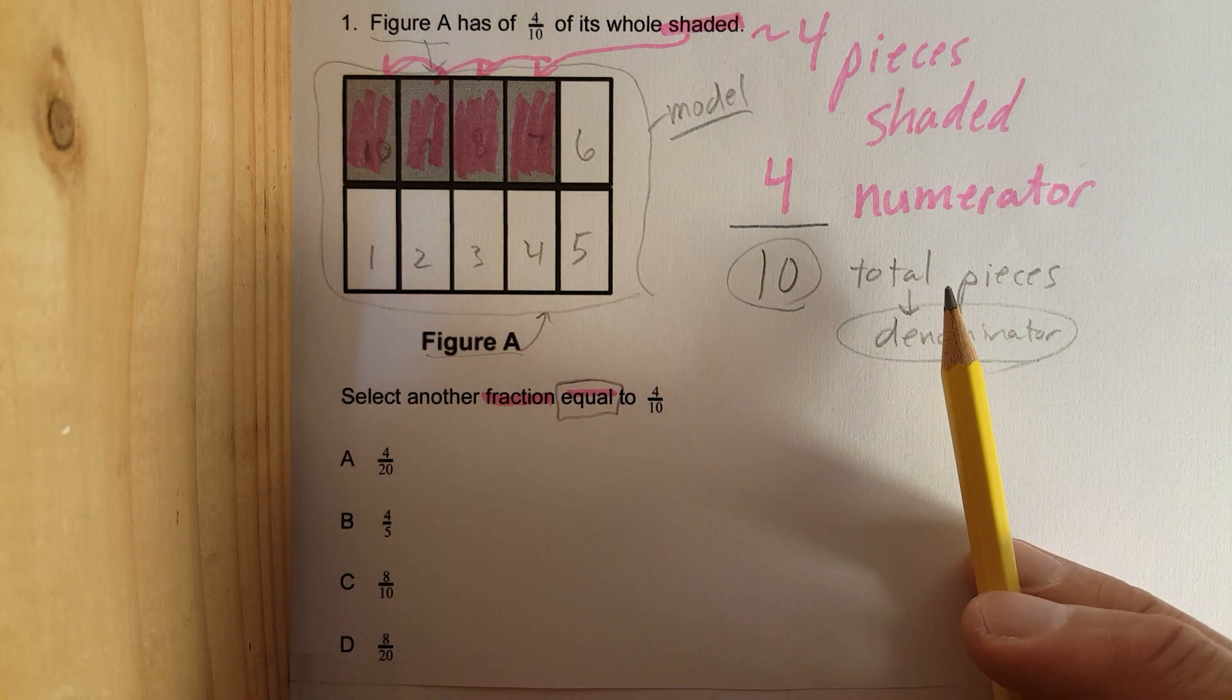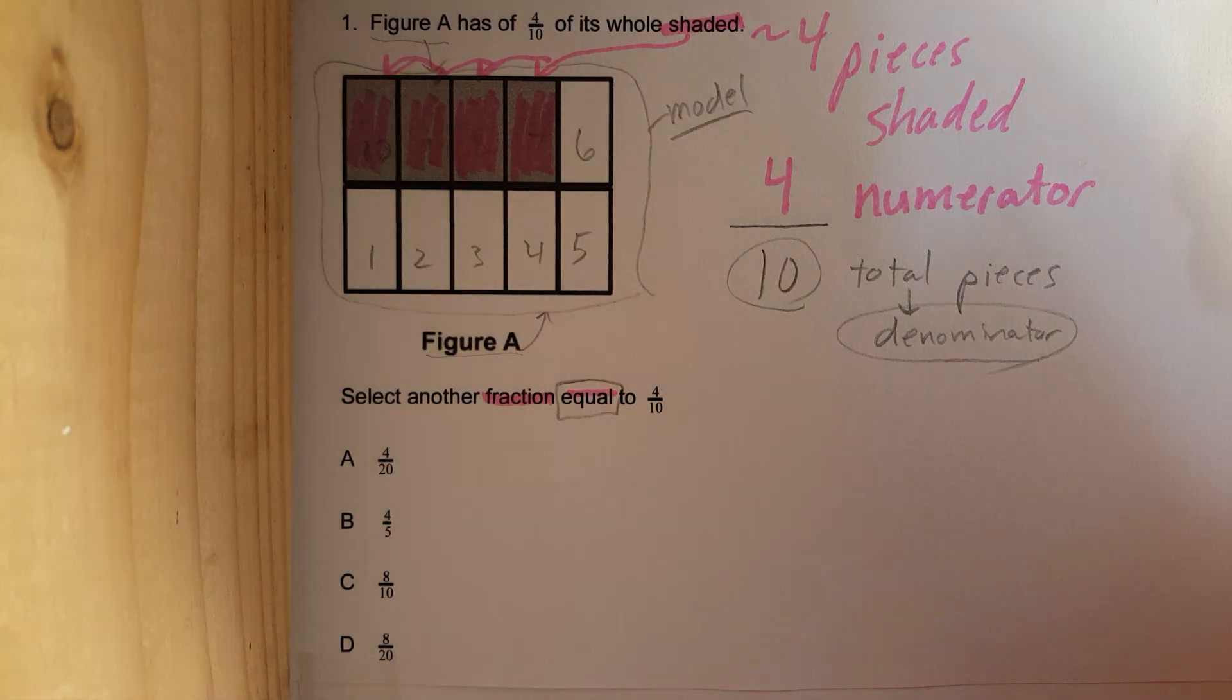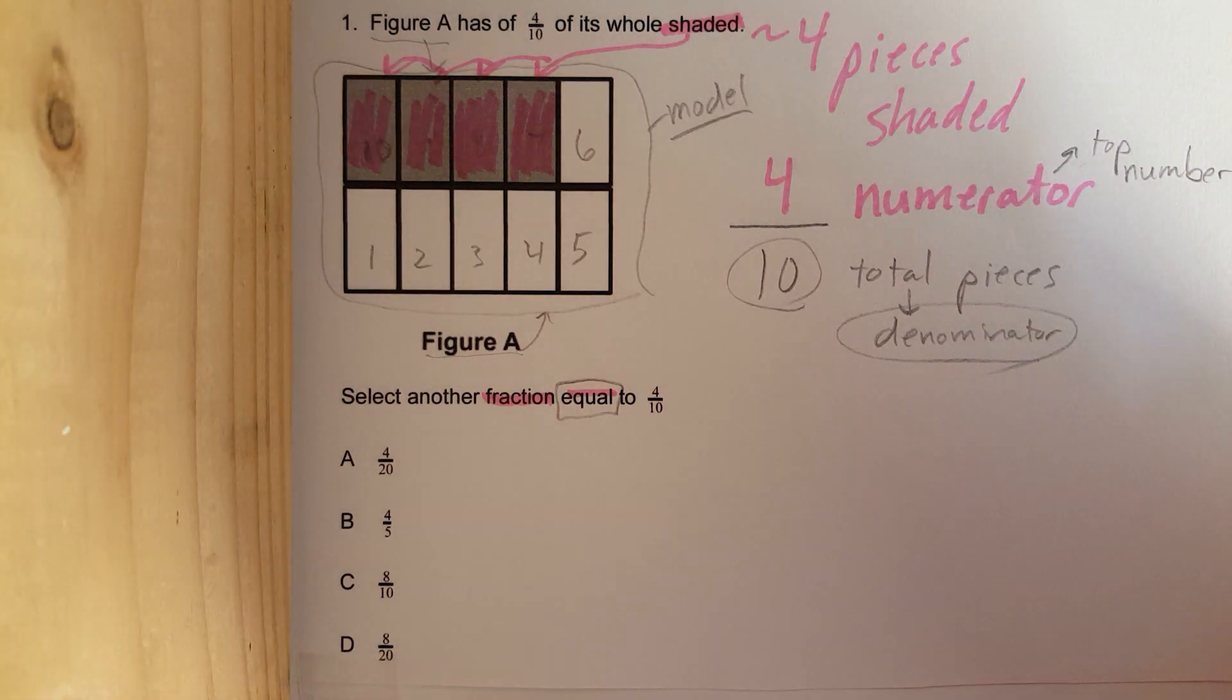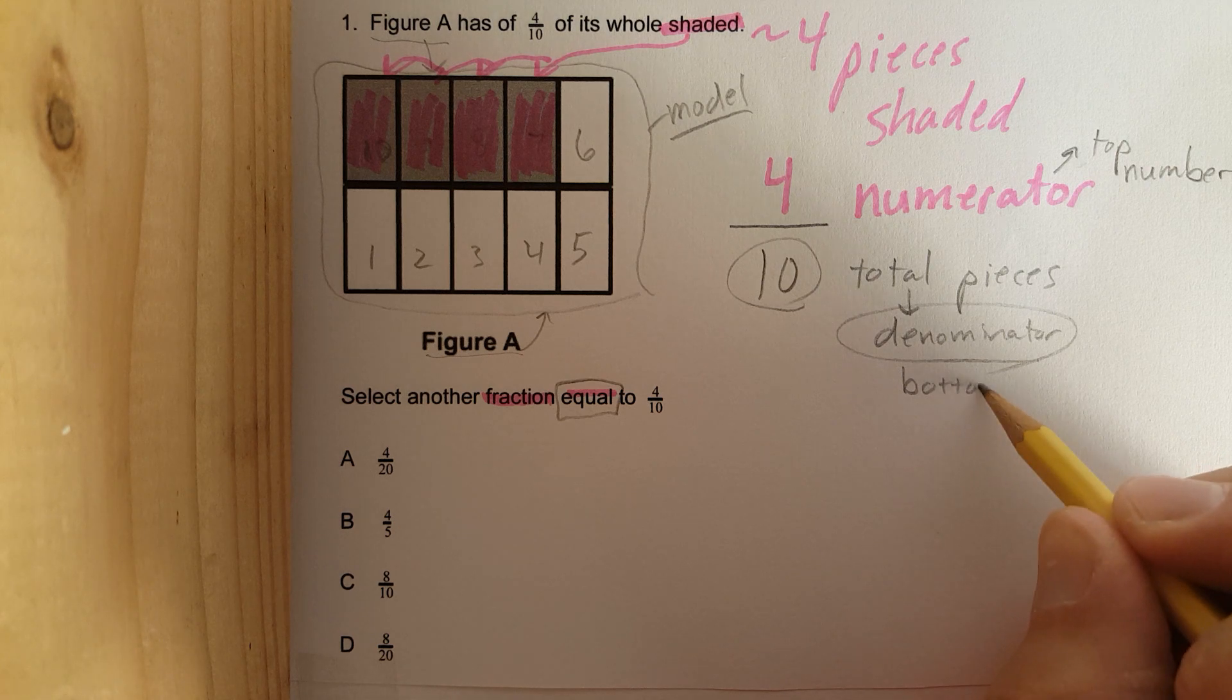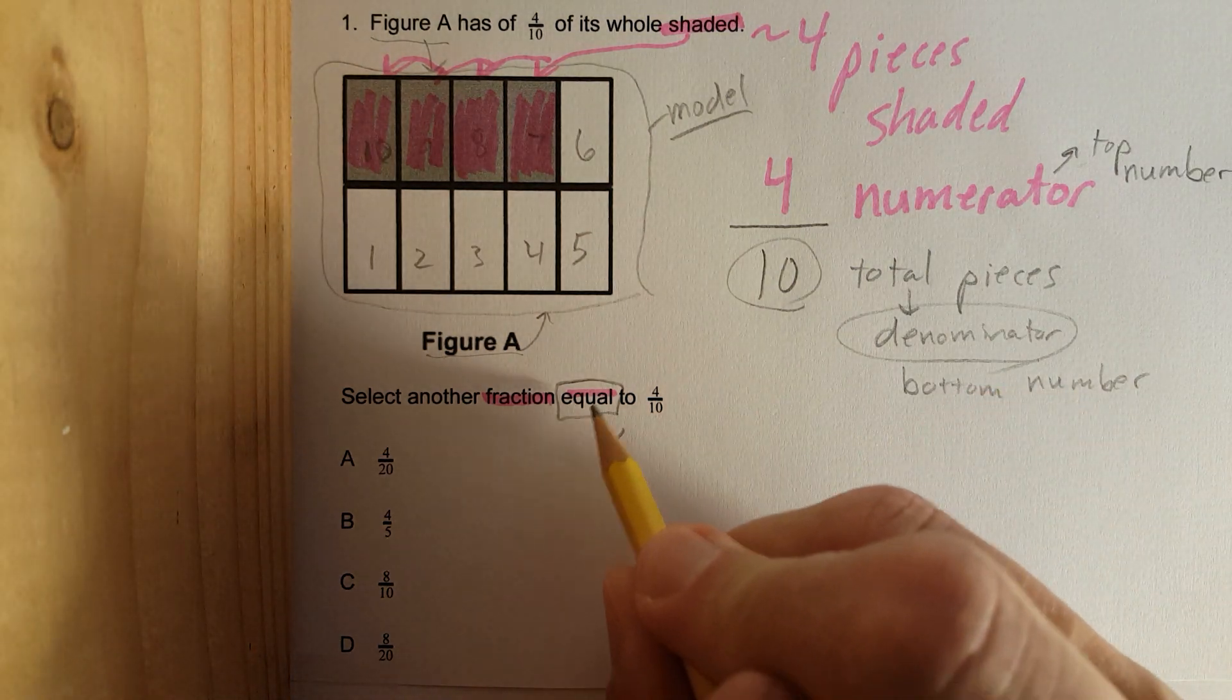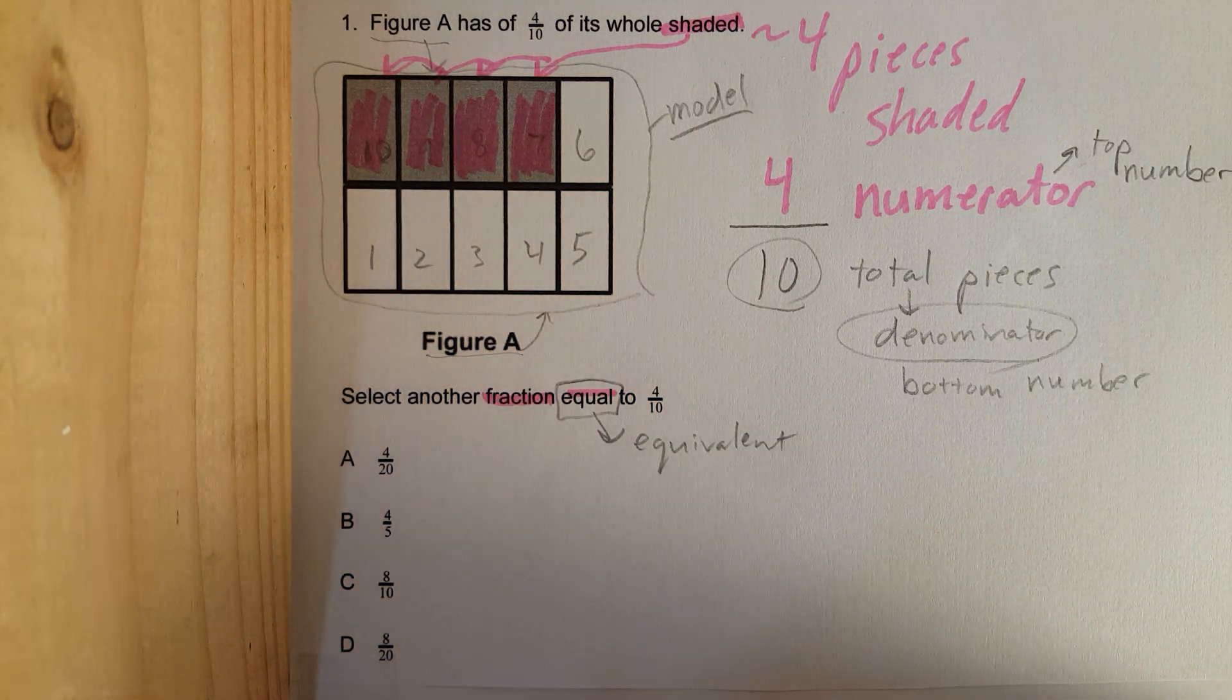So, whenever we are doing fractions in the future, and I say, you know what, guys? The numerator is 4, or 3, or 2, or whatever, you know that it is the top number. The denominator is the bottom number. Another word to see for equal is also known as equivalent. Now, let's attack this problem.